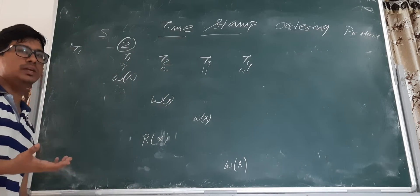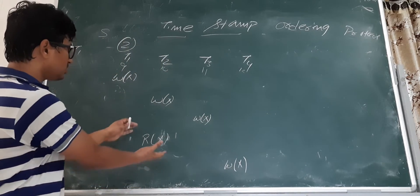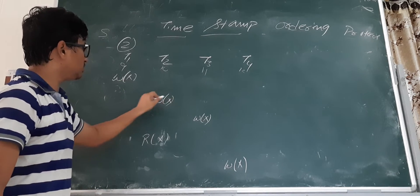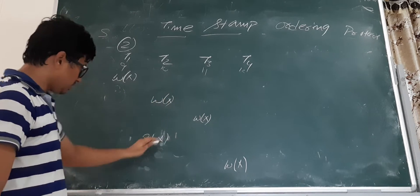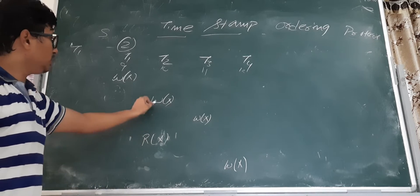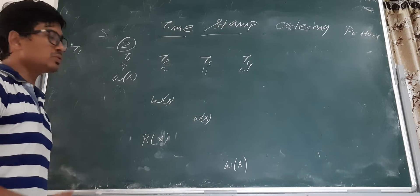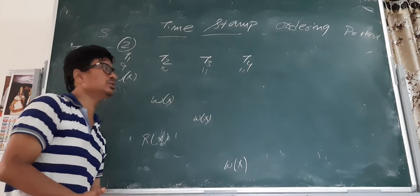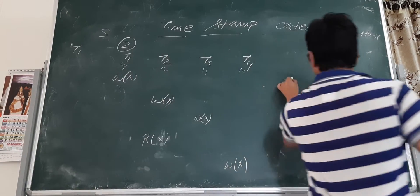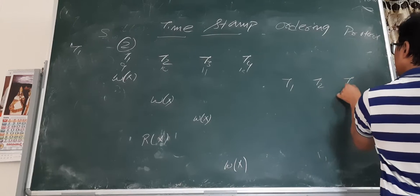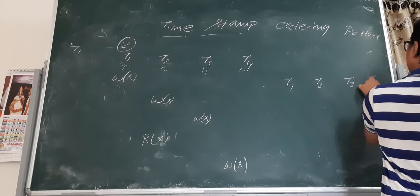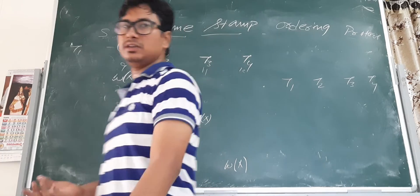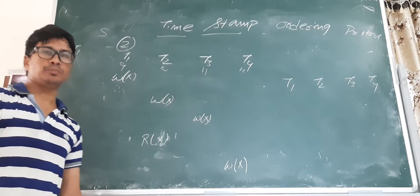This is a non-serial schedule because if you look at the operations, it goes t2, then t3, then back to t2. If you are finding an equivalent serial schedule, the order should be t1, t2, t3, and t4. If we are not finding this order, then we can say it is not following the timestamp ordering protocol.